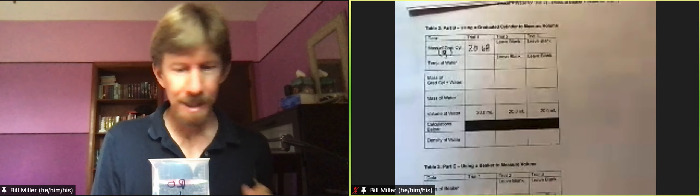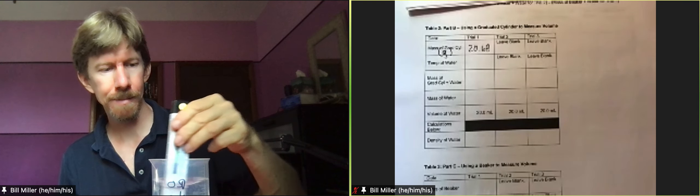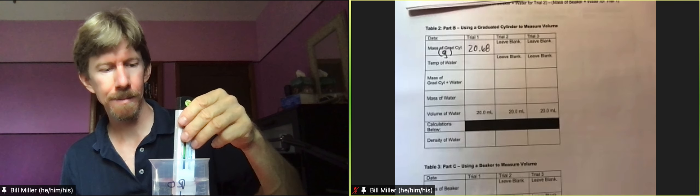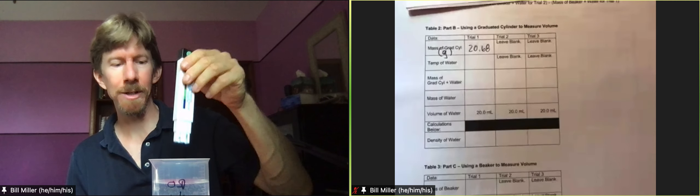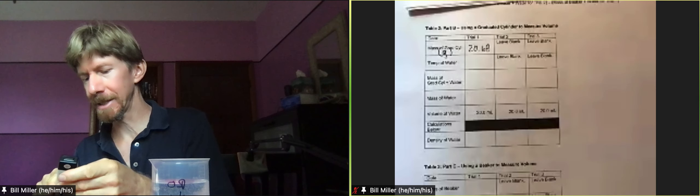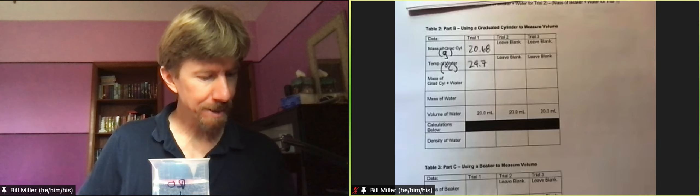Now it's time to take the temperature of my water again. Turn it on, press mode twice for mine. Some of them it just appears. This time for me I get 24.7 degrees Celsius, so I'll turn that off and write down 24.7 degrees Celsius.